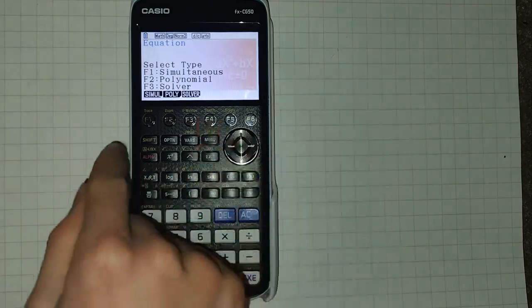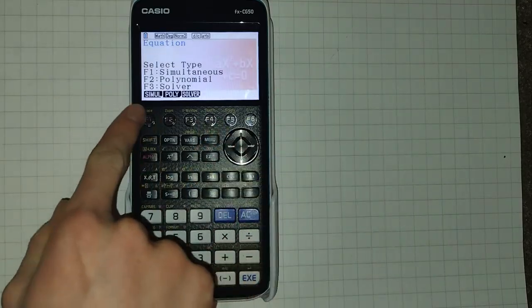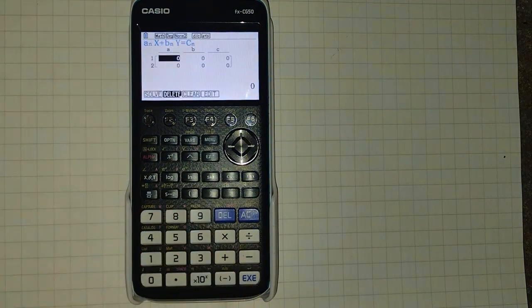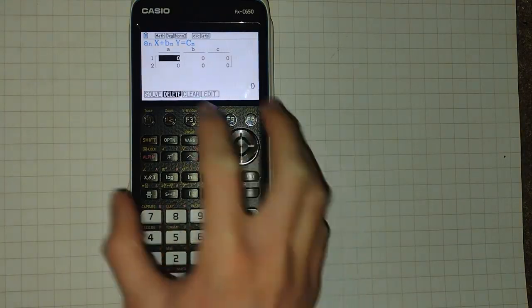We can also solve simultaneous equations using this. Press F1. We then have to select the number of unknowns. For example, if we have 2x plus 3y equals 5, and 3x plus 4y equals 7. I don't actually know if that would have any solutions, just using it as an example. Yes, it would. That has two unknowns. So we can now enter in our equation.